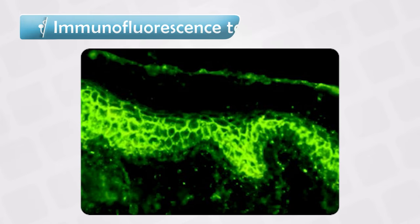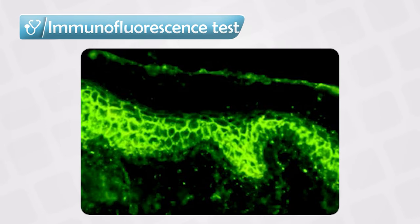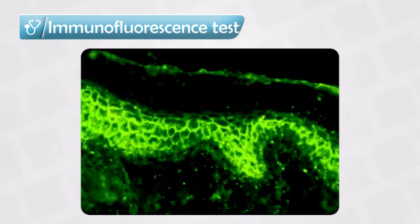Under immunofluorescent light, we will see a reticular pattern immediately around the epidermal cells. This is a sign of active immunity — or autoantibodies in this case — around the keratinocytes.